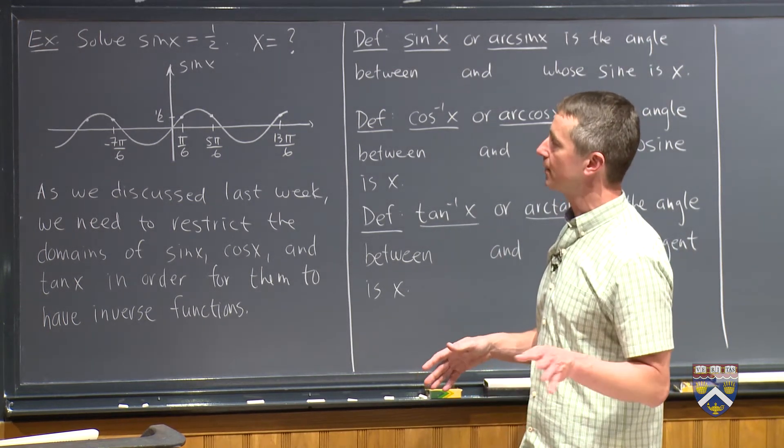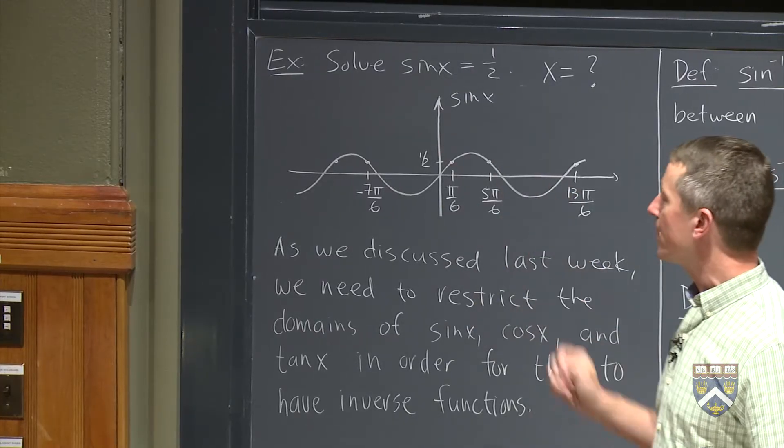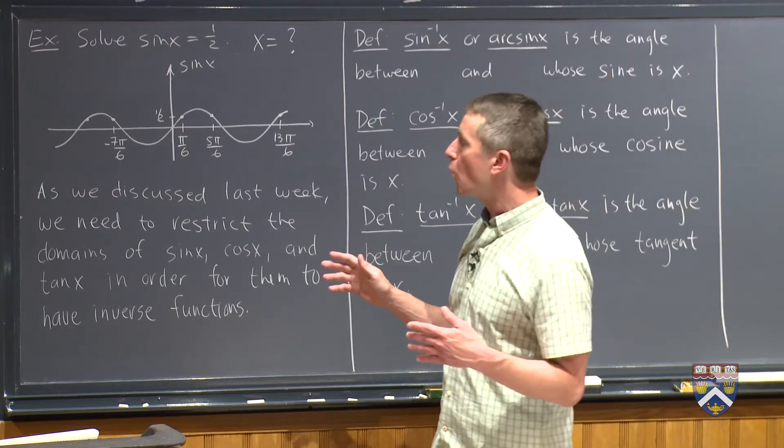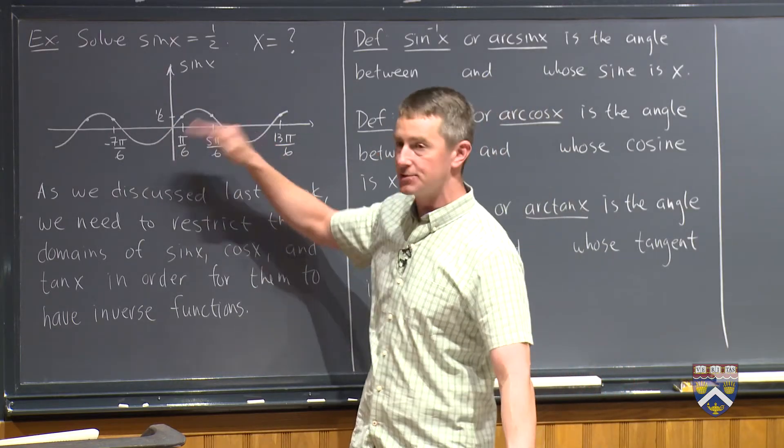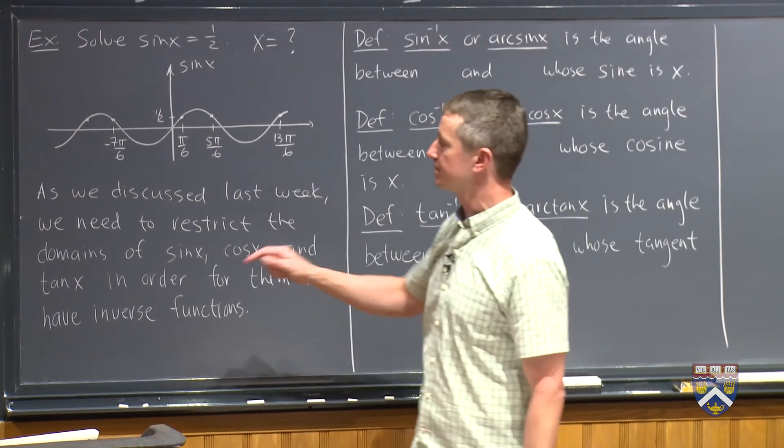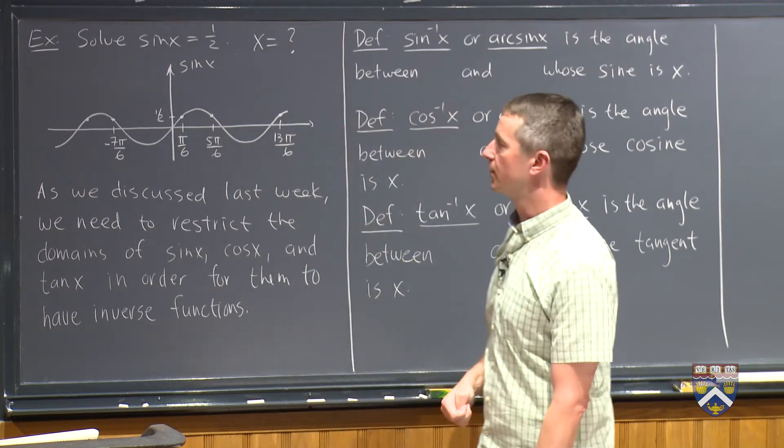So the idea is, and we'll have you do this in an applet in a second, you want to find some part of the domain of sine of x where there are no repeat y values and you get all possible y values from minus 1 to 1. And do the same with cosine and do the same for tangent, except tangent you need to get all the y values from minus infinity to infinity.